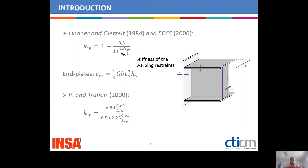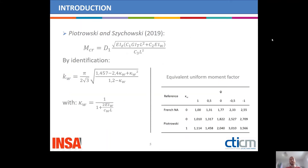Linder and Gesells proposed an expression for the warping coefficient depending on the stiffness of the warping restraints. For end-plates, we have this expression of the stiffness of the warping restraints, which is also found in ECCS. Pi and Traher proposed another expression for KW. Piotrowski and Zekowski developed an analytical model and proposed an expression for the critical bending moment with a formalism different from the formula shown before, but by identification we can see the warping coefficient here.